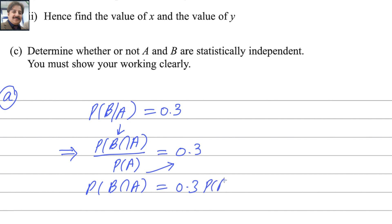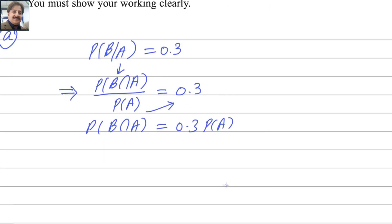There is no difference between probability of A intersection B and probability of B intersection A, so we can replace the left side with probability of A intersection B, and the right side becomes 0.3X.